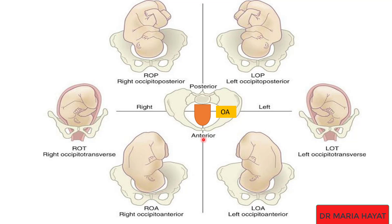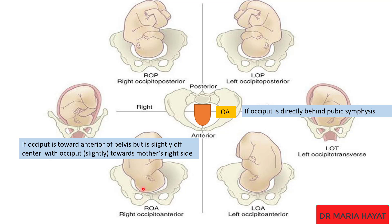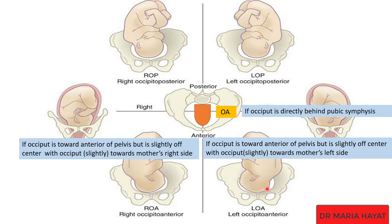If the occiput is towards the anterior side of the pelvis but slightly away from the center such that the occiput is slightly towards the maternal right side, it is called right occiput anterior. If the occiput is towards the anterior side of the pelvis but slightly away from the center such that the occiput is slightly towards the left side of the mother, it is called left occiput anterior.